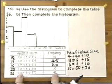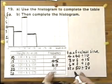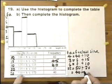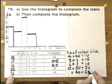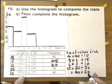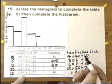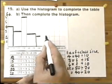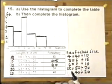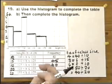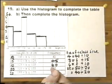Now the last piece of information: frequency density equals frequency divided by class size. 40 divided by 20 is 2. Therefore the last bar, between 155 and 175, goes up to 2. There's quite a lot to understand and get your head round, but once you do, I hope they're not that bad a question.